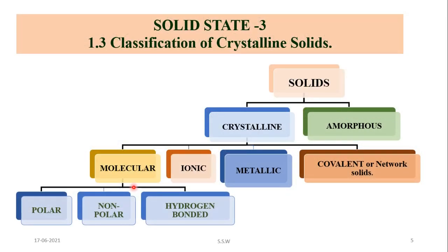Solids are classified into two types: crystalline and amorphous. Crystalline solids are further classified into four types: molecular, ionic, metallic, and covalent. Molecular solids are further classified as polar, non-polar, and hydrogen-bonded. We will study that later on.